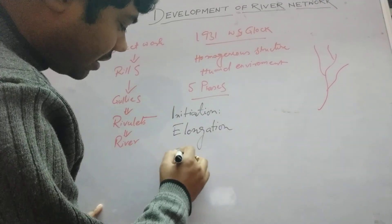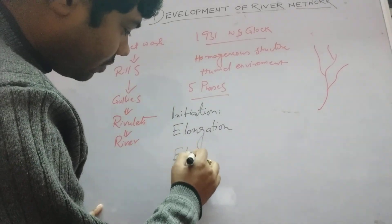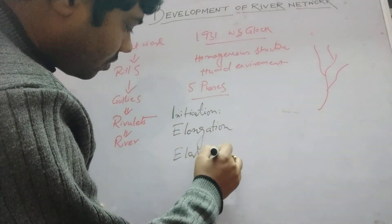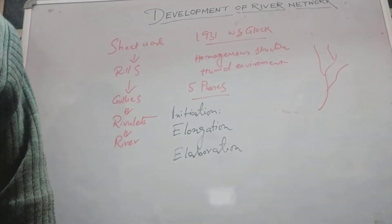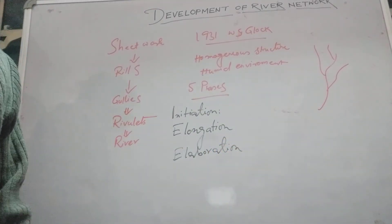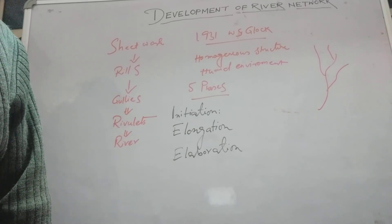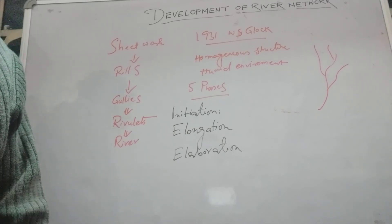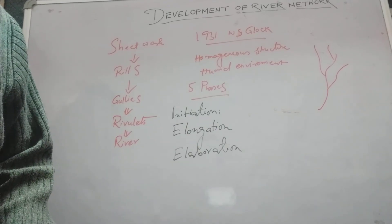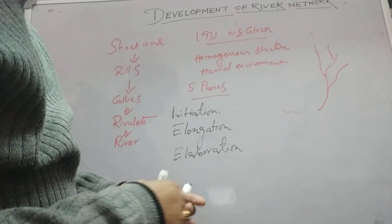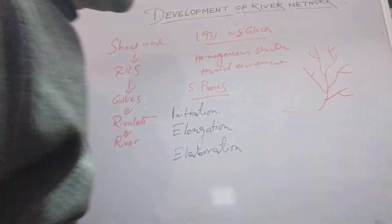The third stage is elaboration. This is the stage characterized by the rapid multiplication of small streams. The network of streams expands and interlocks, and drainage density increases significantly at this stage.